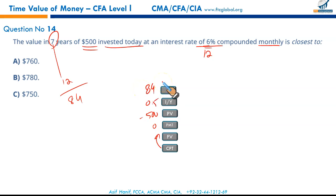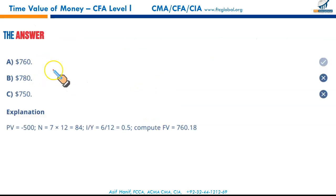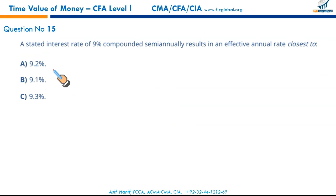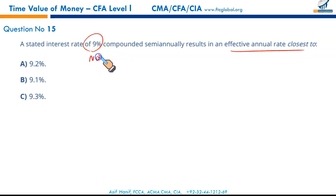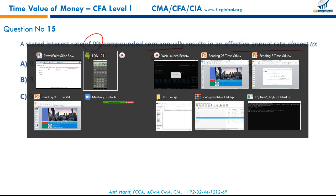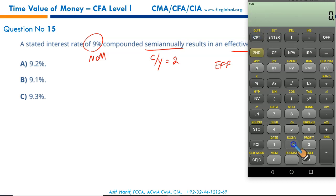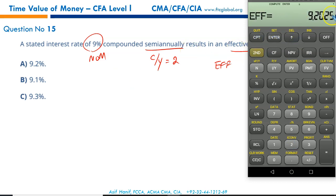Question 15: a stated rate of 9% compounded semi-annually results in an effective annual rate of? Semi-annually means compounding periods = 2. Using ICONV: nominal = 9%, frequency = 2, CPT. Result is 9.2025%. Don't select 9.3% — rounding gives you 9.20%, so that makes A the correct option.